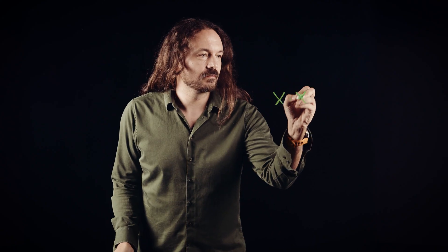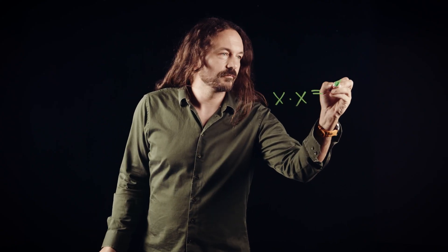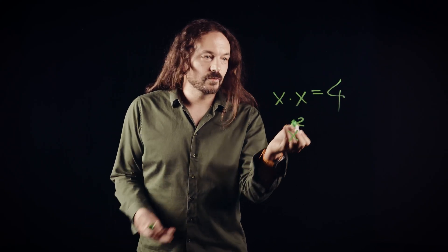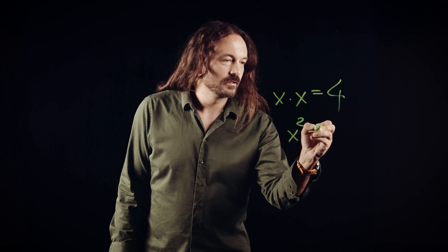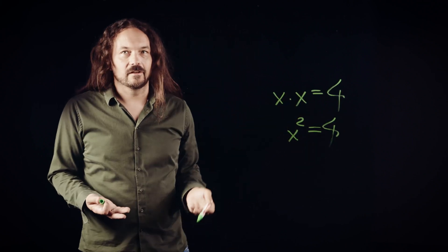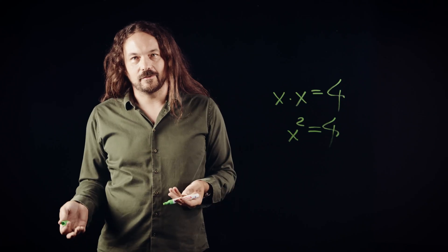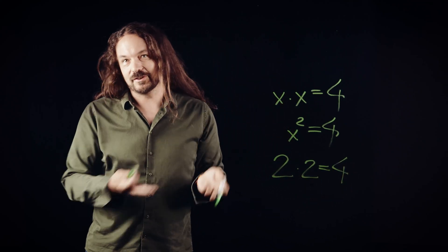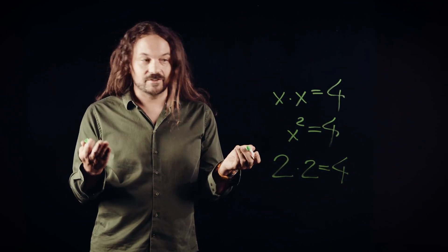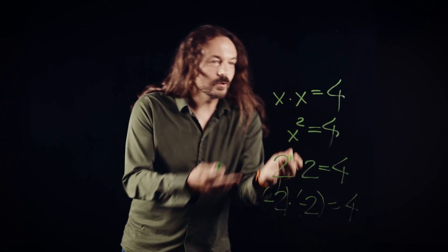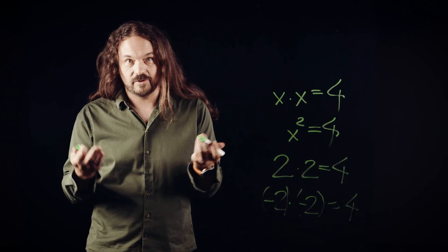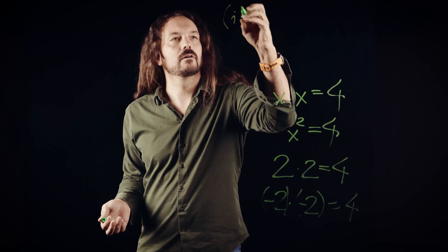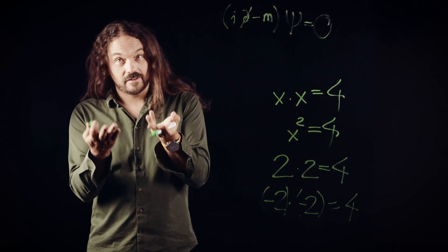x times x equals, let's say, 4. Or in other words, x squared — which is why we call it the quadratic equation — equals 4. So what number multiplied by itself gives 4? Well, of course, 2. But that's not the only possibility, right? Minus 2 is just as good. So in fact, this equation has two possible solutions. Now, if we write down the Dirac equation, this has two solutions.